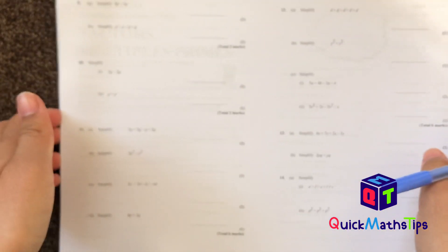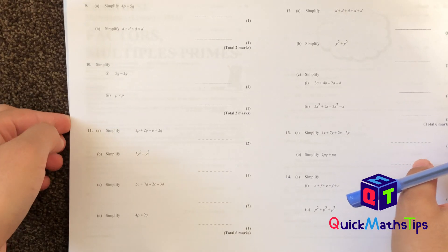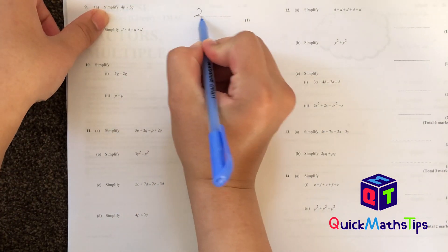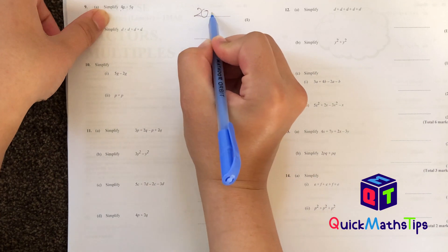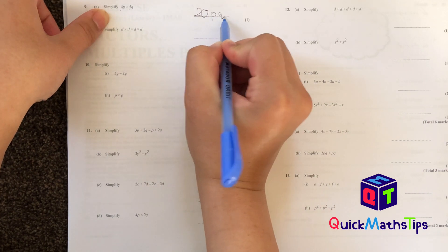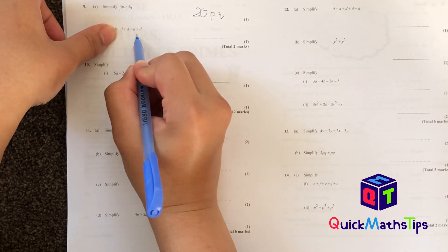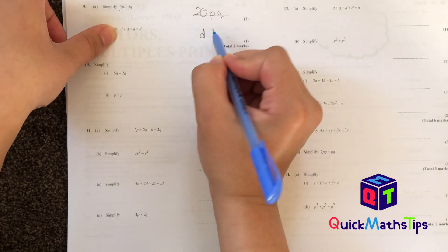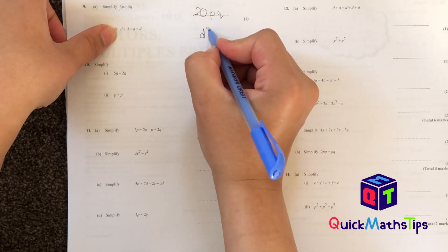Next question: simplify 4P times by 5Q. 4 multiplied by 5 simplifies to give me 20. P multiplied by Q gives me PQ. This one says D times D times D times D — how many times is D multiplying by itself? 4. So it becomes D to the power of 4.